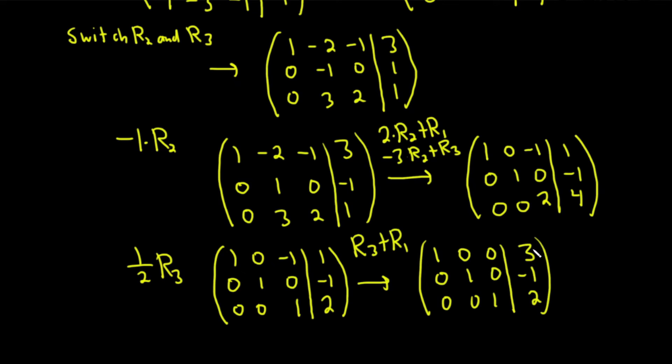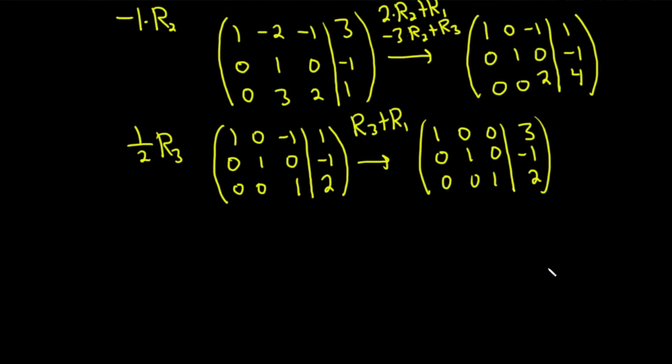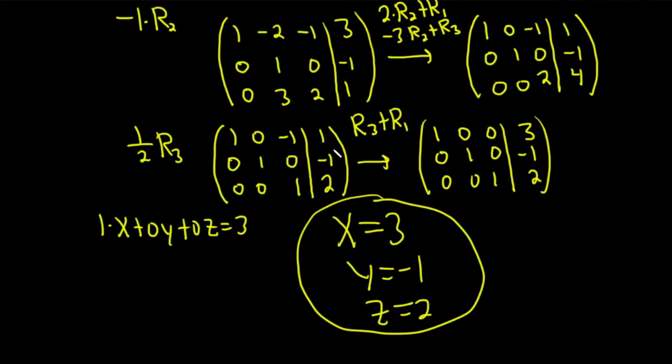So now we can go back to our system of equations using the coefficients. So this first row is just 1 times x. If you really wrote it out, it would be 1 times x plus 0 times y plus 0 times z equals 3. Nobody ever writes this, but I wanted to show you that's what the first row would look like. So basically it's x equals 3. The next one would be y equals negative 1. The last one would be z equals 2. And that would be the solution to this system of equations using matrices. So it's a very powerful technique.